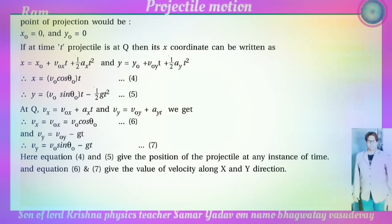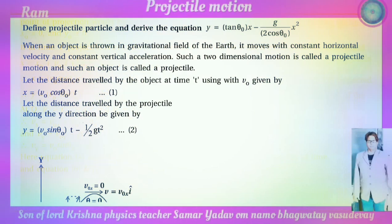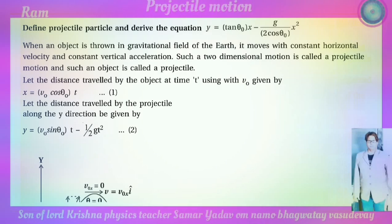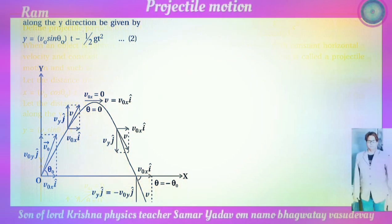Now we derive the equation y equals tan(theta-zero) x minus g divided by (2 cos-squared theta-zero) times x-squared. When an object is thrown in a gravitational field, it undergoes projectile motion. The distance traveled along x at time t is x equals v-zero cos theta-zero times t, and along y is y equals v-zero sin theta-zero t minus one-half g t-squared, as shown in the figure.